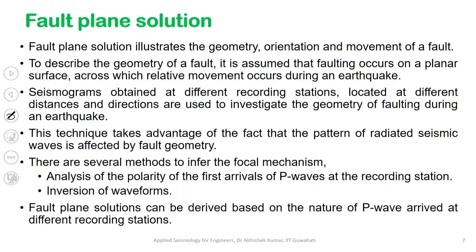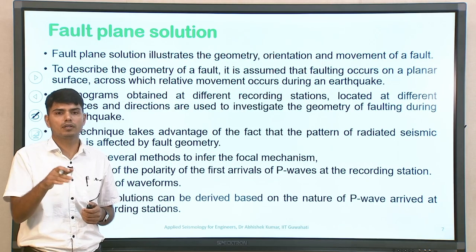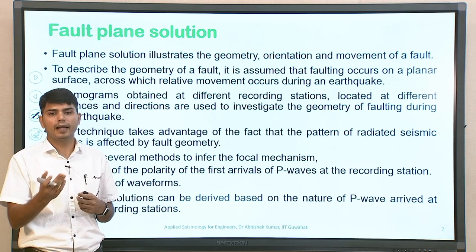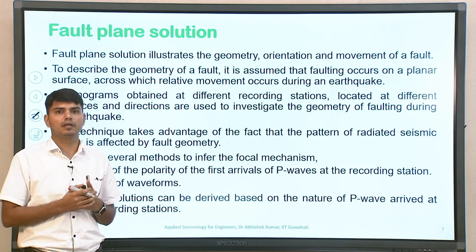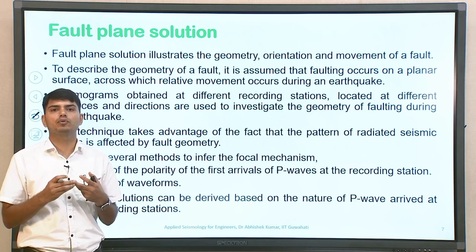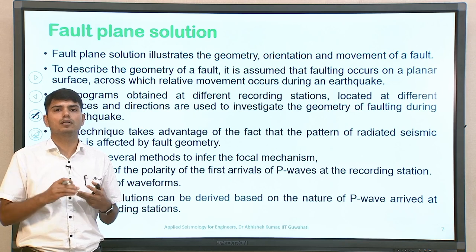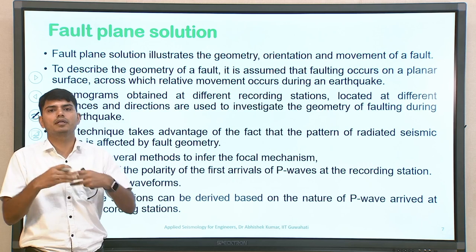Fault plane solution basically helps you in understanding the orientation of the fault line, the orientation of the fault plane, and what likely happened during a particular earthquake in terms of hanging wall and foot wall movement. It gives you the geometry — the orientation of the fault depending on the length available on the topography — and also the movement that occurred. Though strike and dip give some information about fault plane solution, they are not complete because they don't indicate the movement that happened during a particular earthquake; fault plane solution covers that part as well.